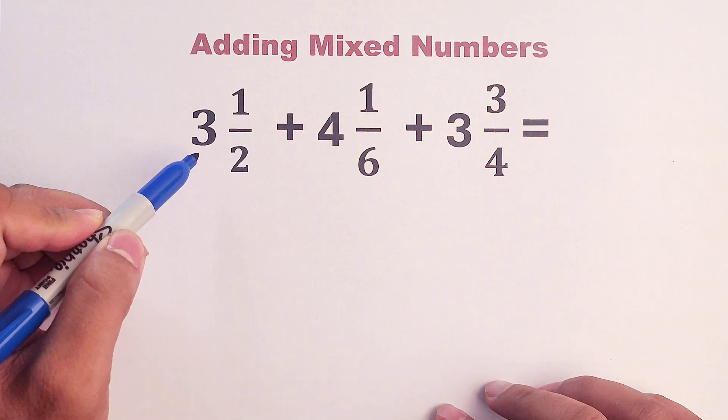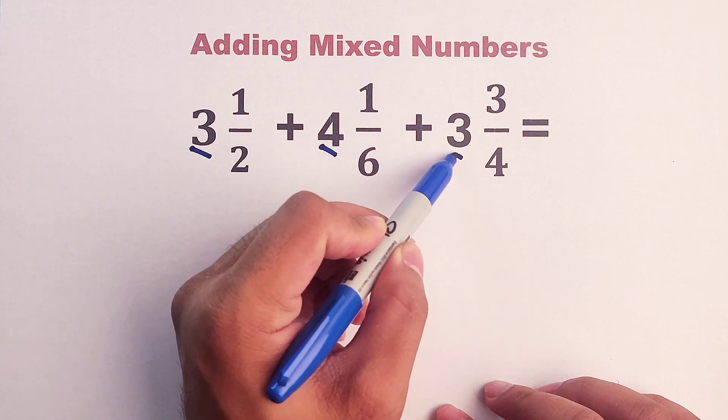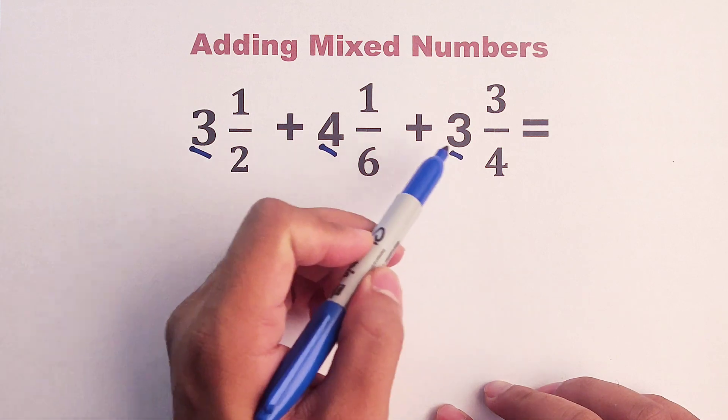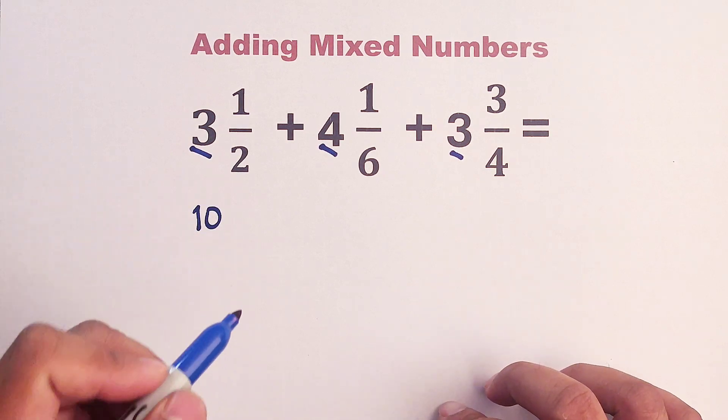We will add first the whole numbers. We have three plus four plus three. So three plus four is seven, plus three, that would be equal to ten. So right now, we have our whole number.